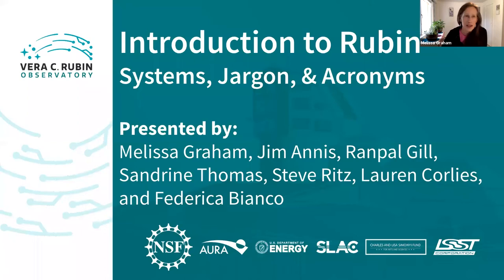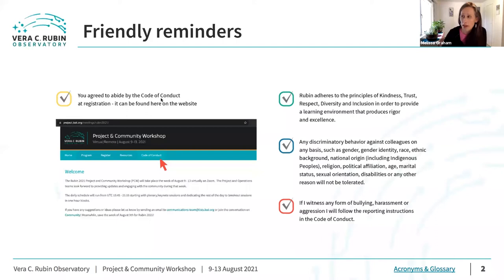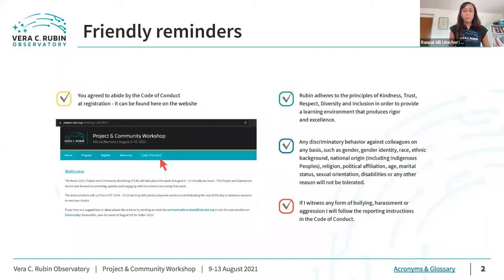Welcome everyone to this session called Introduction to Rubin, where we're going to go over all the systems, the jargon, and the acronyms that will help you get oriented for the week ahead, especially if you are new to Rubin. The first thing we're going to do is go over some friendly reminders. We do have a code of conduct, and if you witness or experience any forms of bullying, harassment, or aggression, you can find the code of conduct on the PCW website, with instructions on who to contact.